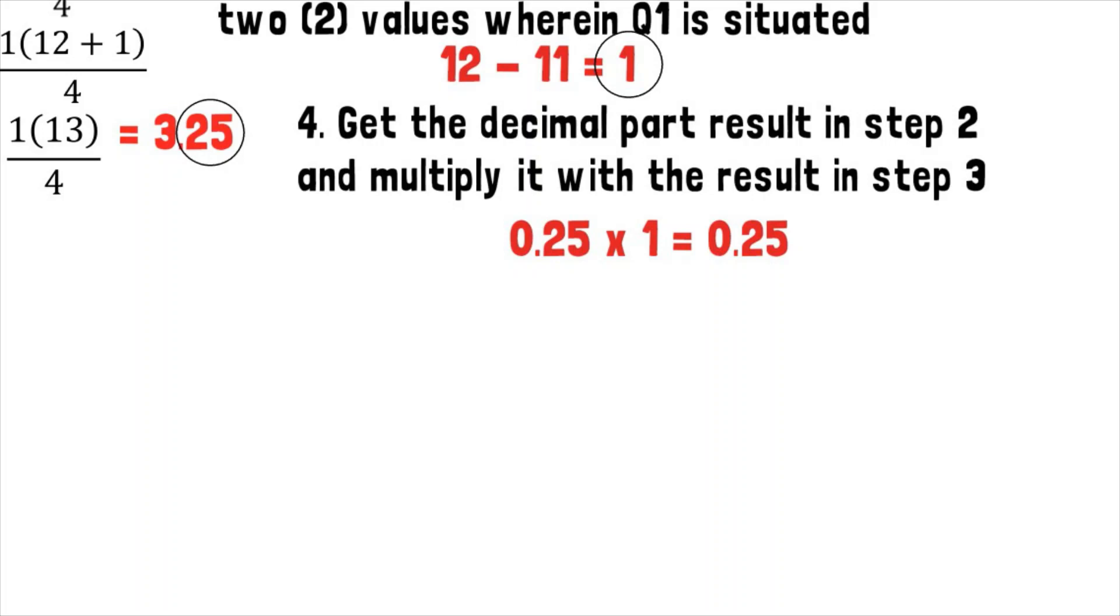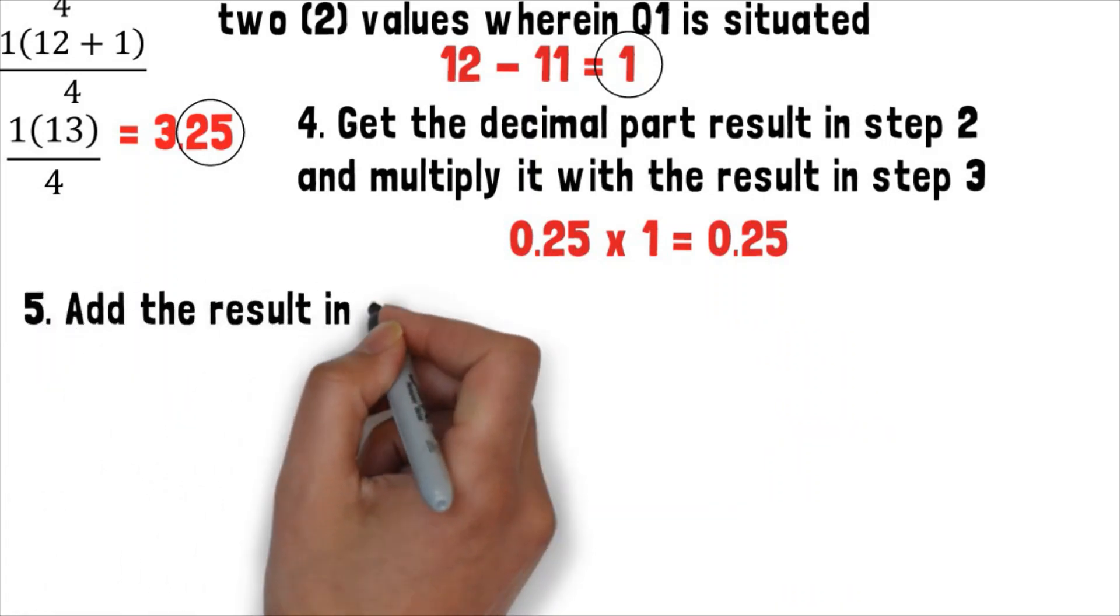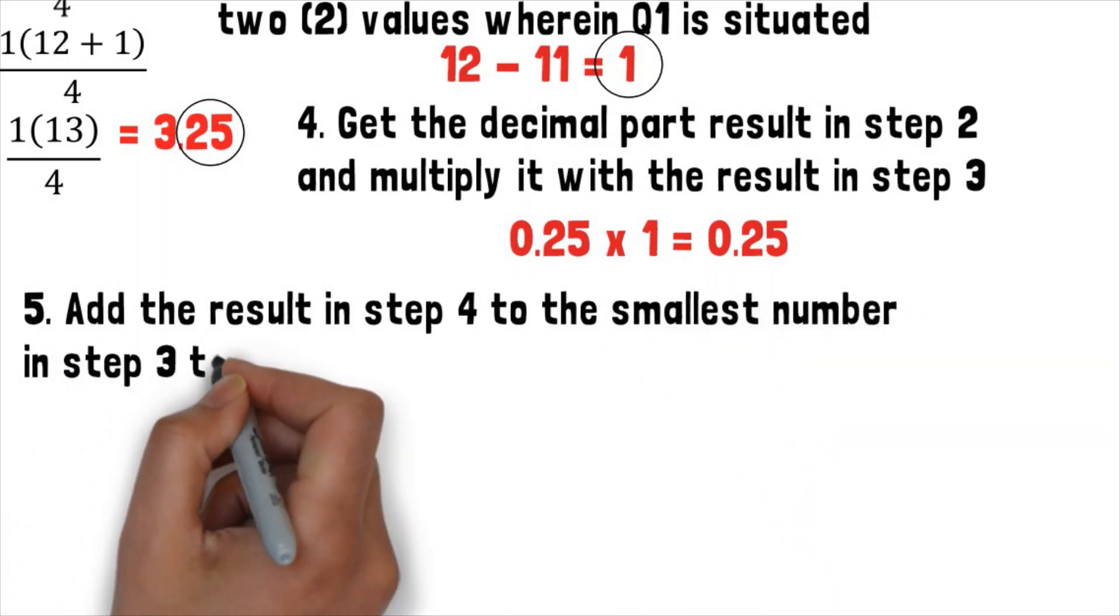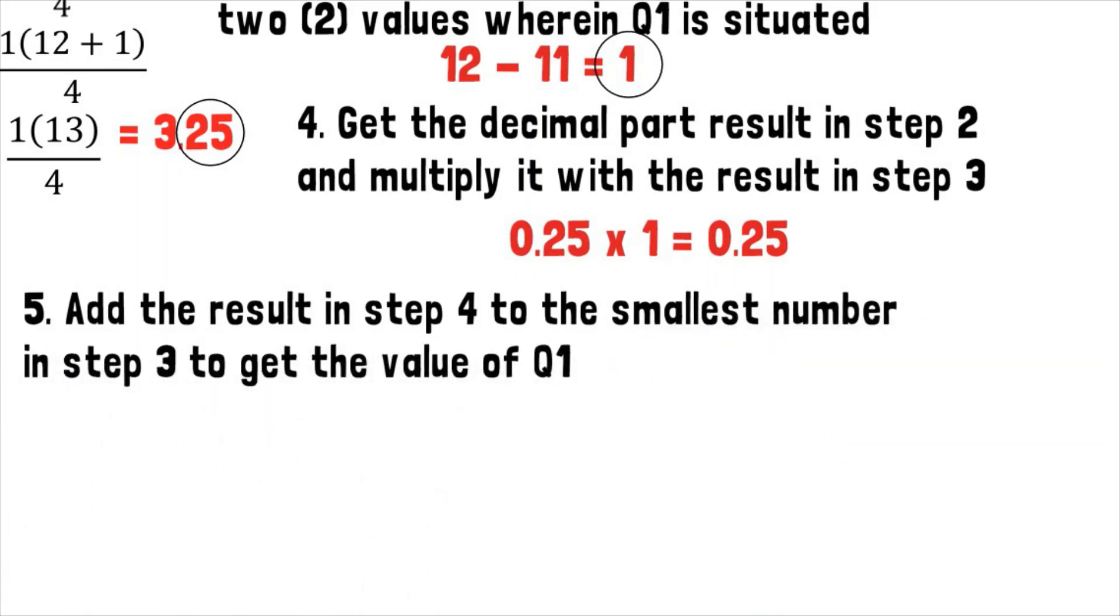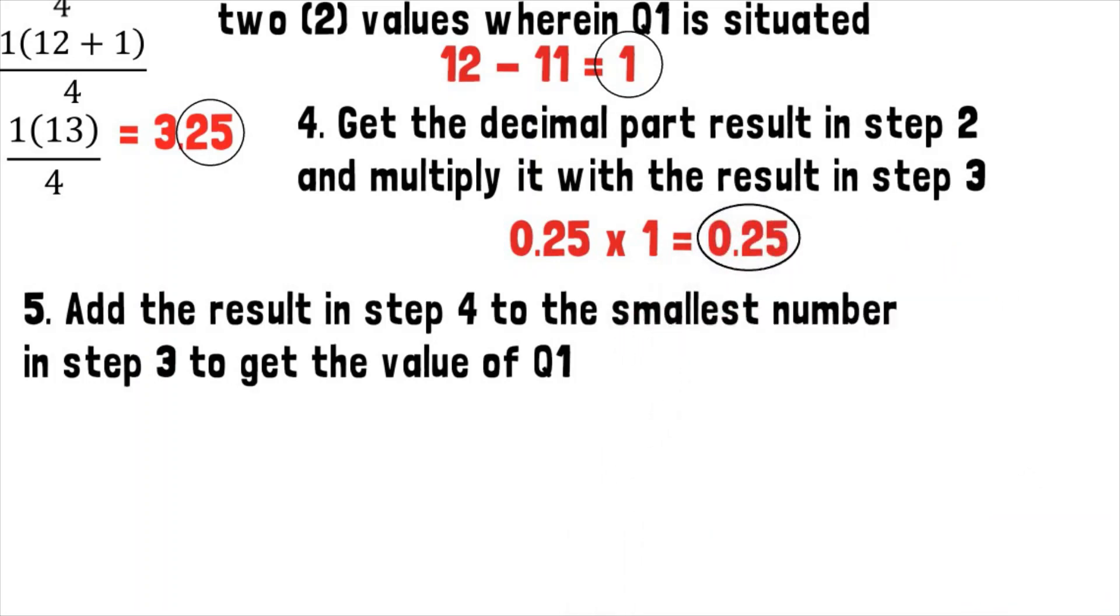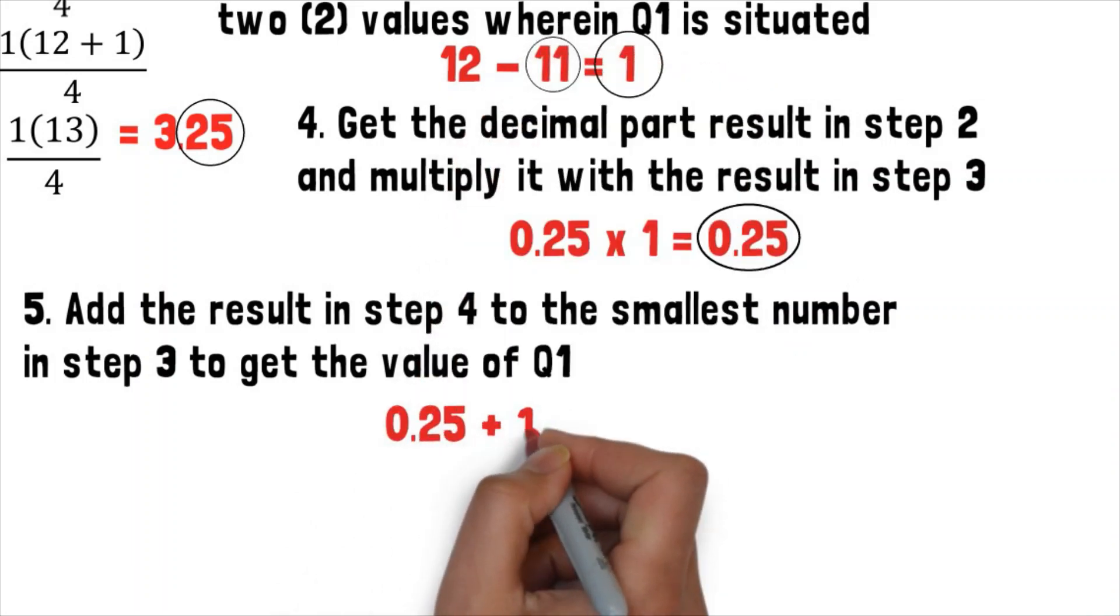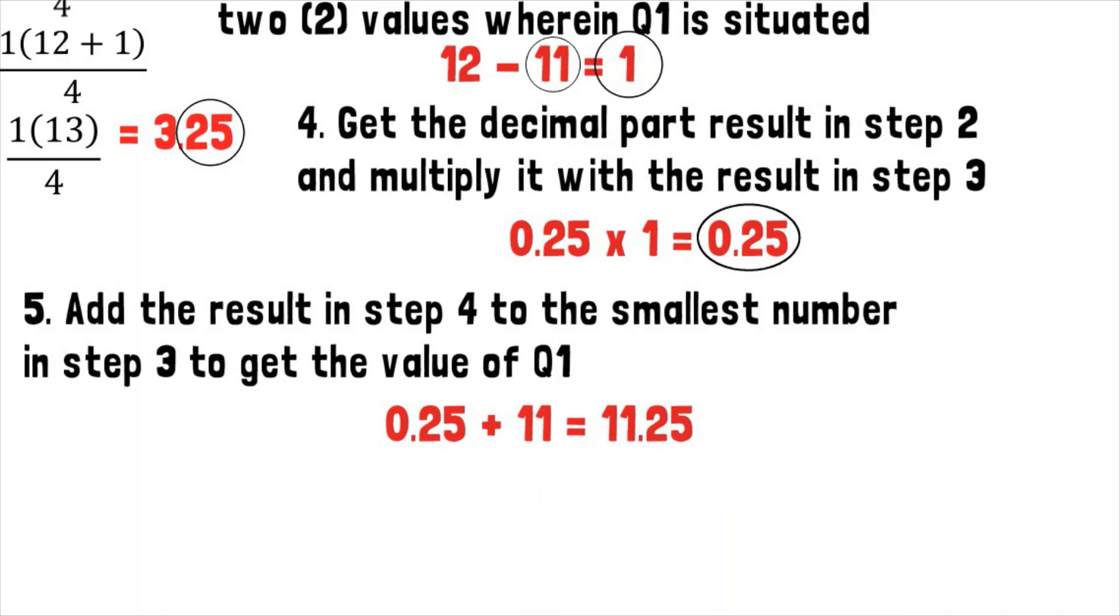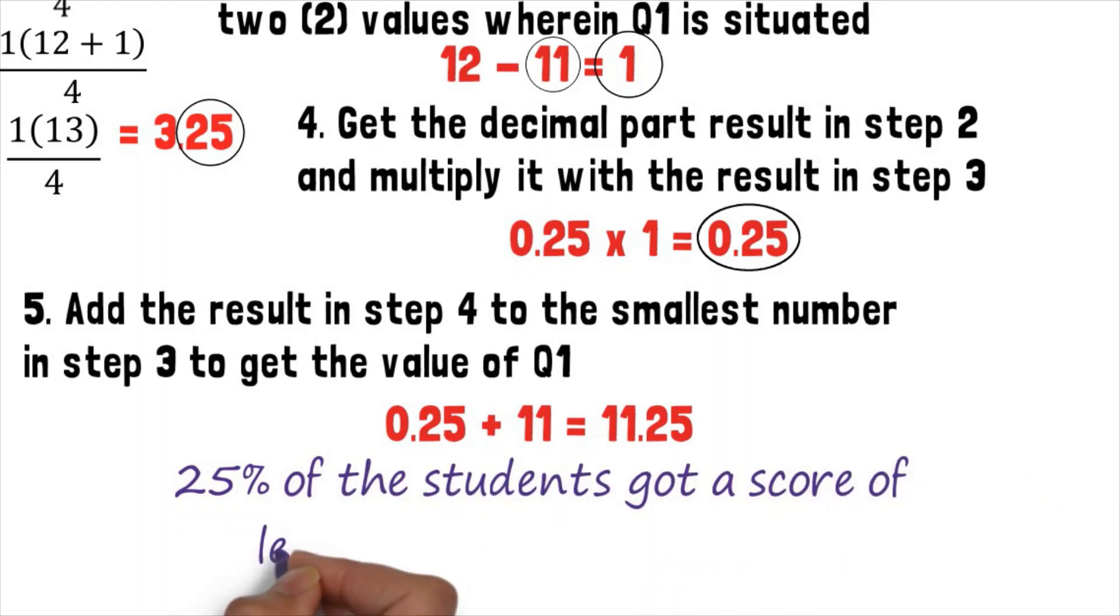Lastly, in step 5, we will add the result in step 4 to the smallest number in step 3 to get the value of Q1. The result of step 4 is 0.25 and the smallest number in step 3 is 11. We'll add the two that gives us 11.25. So the value of our quartile 1 or the lower quartile equals 11.25. That means 25% of the students got a score of less than or equal to 11.25.